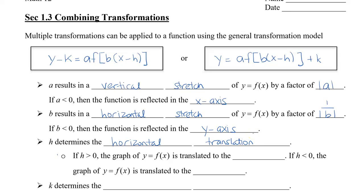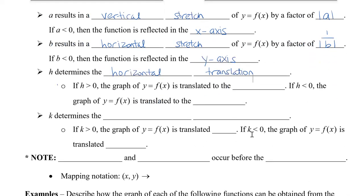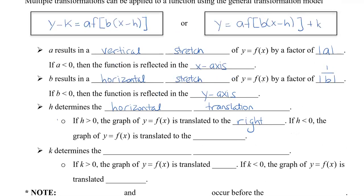And then if h is positive the graph is going to be translated to the right. And if h is negative, remember when we put a negative it's going to actually become positive, but we still know that h was negative and it's going to be translated to the left.